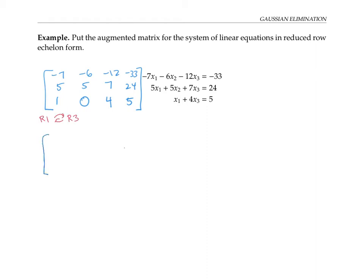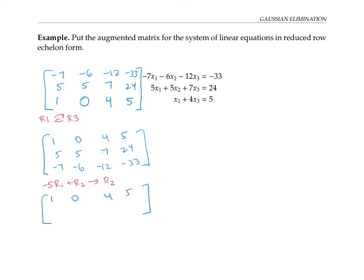To get this matrix in reduced row echelon form, I'm going to need a leading one in every row that's not all zeros. I could get a leading one in the first row just by dividing the whole row by negative seven, but I think it's going to be easier instead to just swap the first and the third rows. So that'll give me this new matrix. Now I'm going to try to get zeros in the column under this one, so that the next leading ones will be to the right of this leading one as they're supposed to be. To get a zero in this position, I'm going to take negative five times the first row plus the second row, and replace the second row with that sum.